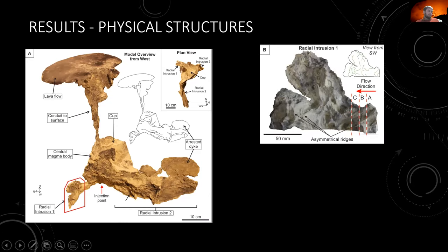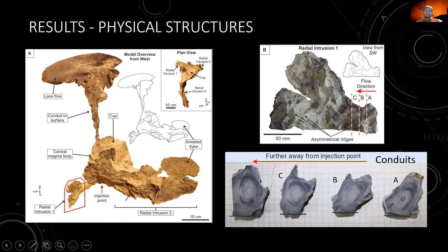Looking at this section in detail, on the surface of the intrusion you can see some curved ridges that are asymmetric in shape and profile — which will be addressed later. Slices taken perpendicular to the flow direction (flow running right to left in these images) reveal how the internal fabrics in terms of coloring have developed, showing localization through the core of the intrusion.